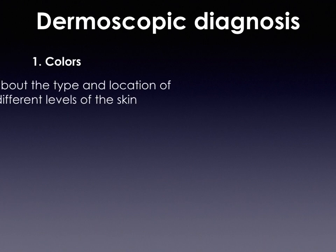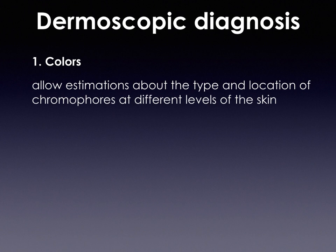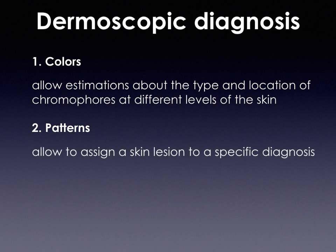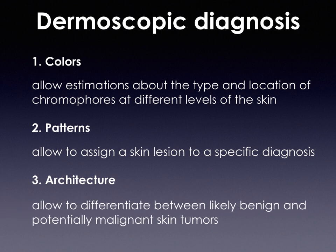First of all, when dealing with the recognition of skin cancer, we need to analyze three main features: colors, which allow estimations about the type and location of chromophores at different levels of the skin; patterns, which allow us to assign a skin lesion to a specific diagnosis; and architecture, which allows us to differentiate between likely benign and potentially malignant skin tumors.